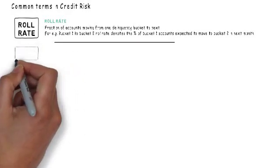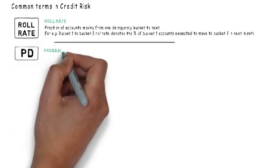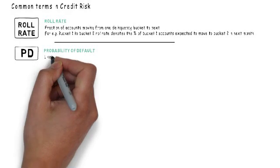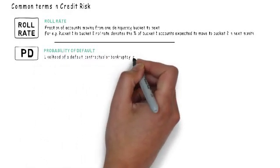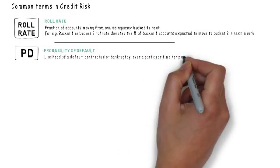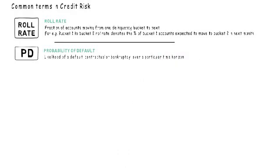PD refers to probability of default. Default is an event when the account is either contractually charged off or returned due to bankruptcy. PD is defined over a certain time horizon. For example, if 12 months PD is 10%, that implies that the account has 10% likelihood to charge off or go bankrupt within the next 12 months.